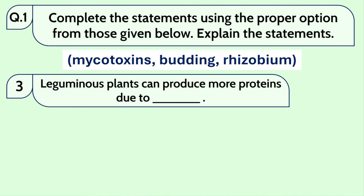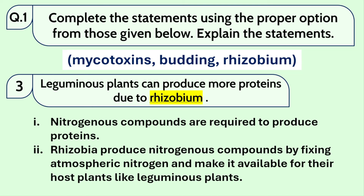Question number 3: leguminous plants can produce more proteins due to Rhizobium. Why? Look at the plant proteins — they contain nitrogen. Nitrogen is needed to produce proteins. How can we get nitrogen? Actually in the atmosphere, nitrogen is N2 gas. If you have seen our last video, chapter number 7 exercise solution, we discussed the nitrogen cycle. The N2 gas is not very reactive, so we cannot directly consume it.